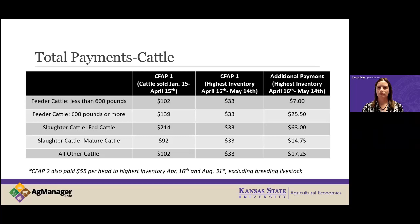Todd encouraged producers to be patient — additional guidance should be coming on how to handle those situations, and as soon as they know something they will publicize it through field offices and other means of publication. Robin added: if you're in that category, don't panic — it is being worked out.